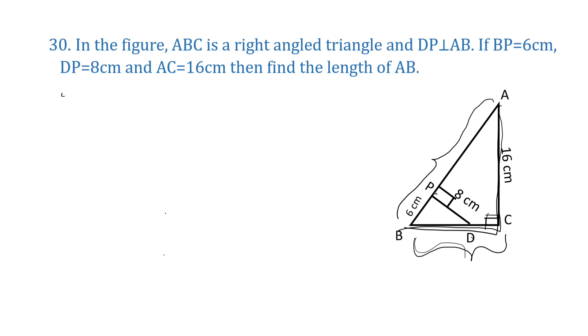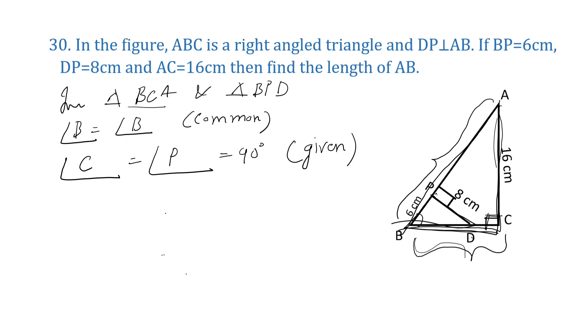Now, in triangle BCA and triangle BPD, what is common? Angle B is equal to angle B. Observe this angle. For smaller triangle and for bigger triangle, they are the same. And angle C is equal to angle P, equal to 90 degrees, given. So by angle-angle criterion, triangle BCA is similar to triangle BPD.